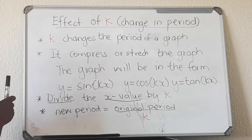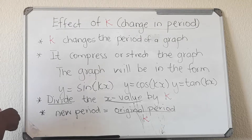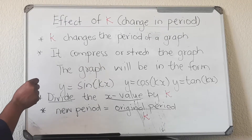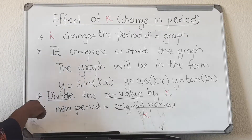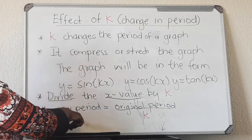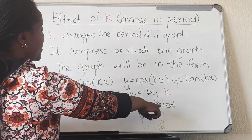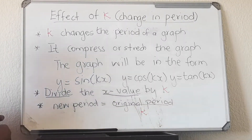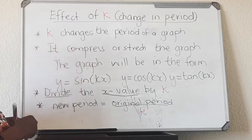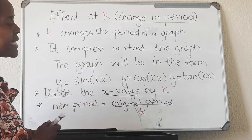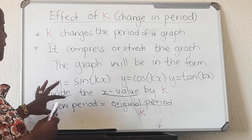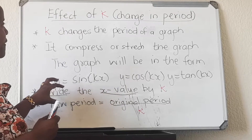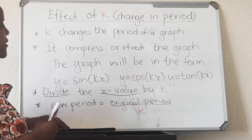When you are given a question in a question paper to find the period, and you find that K has been changed and is not one, you find the new period by dividing the original period by K. We're now going to look at an example where you are asked to sketch a graph where K has been changed.